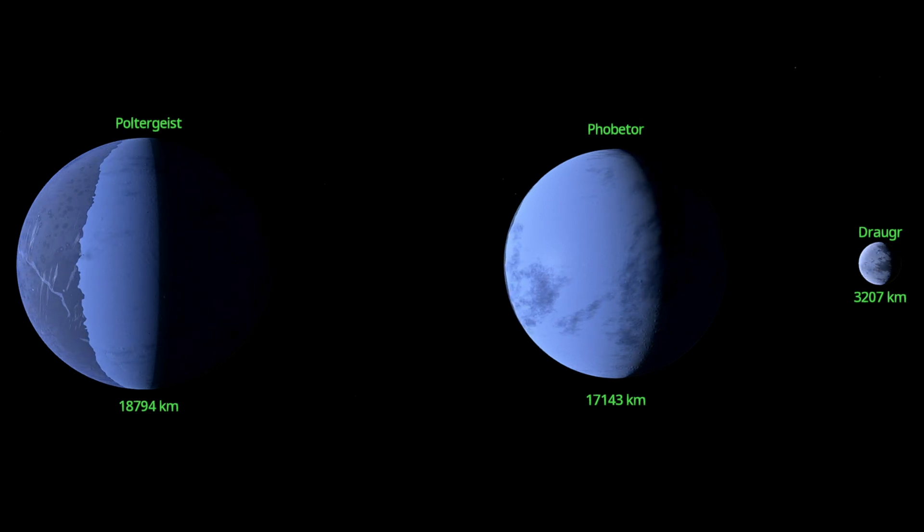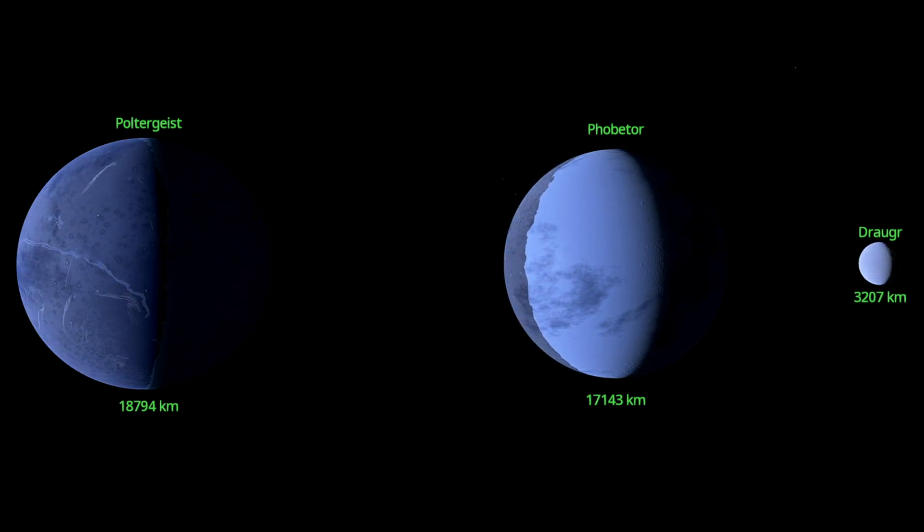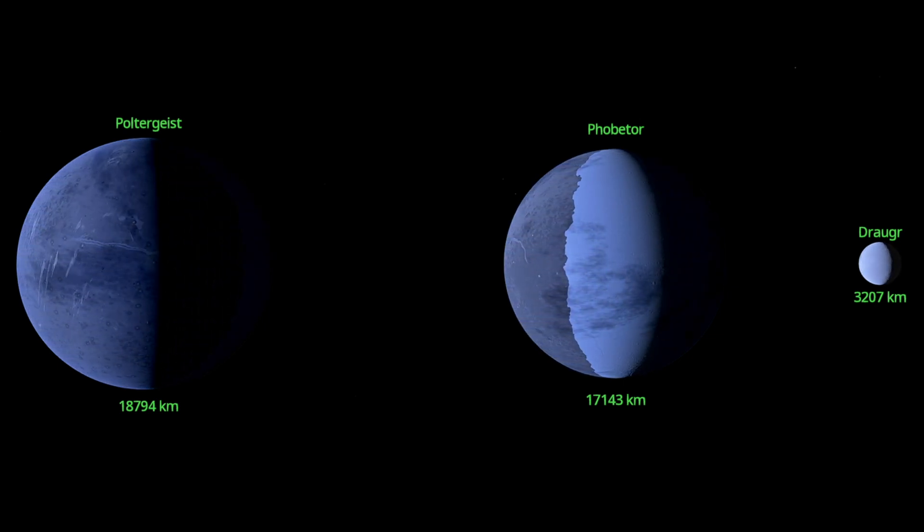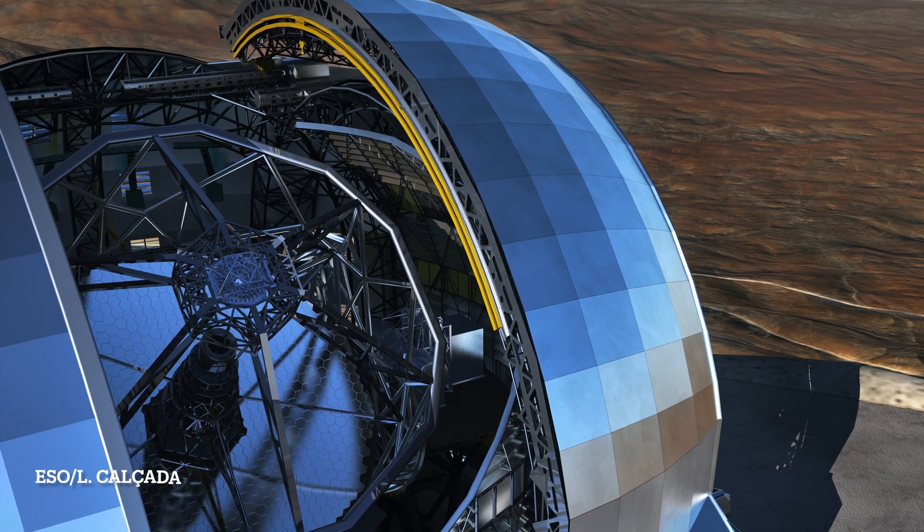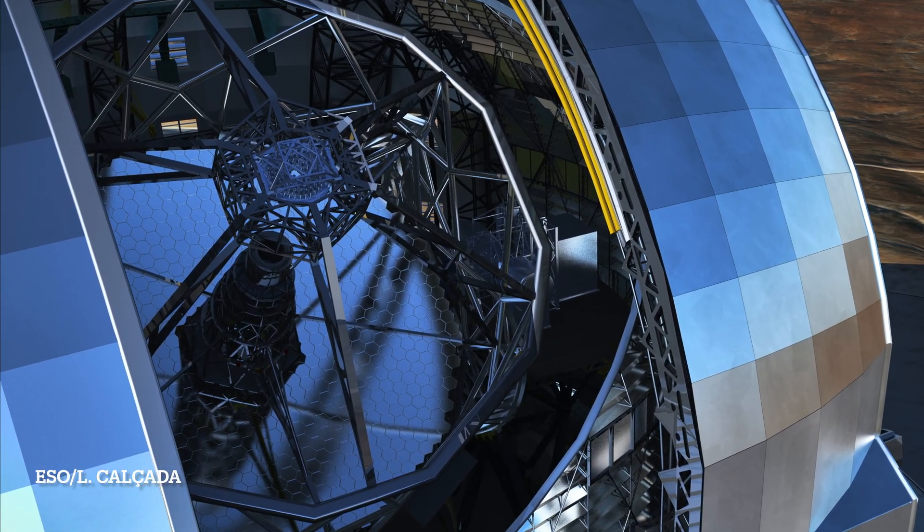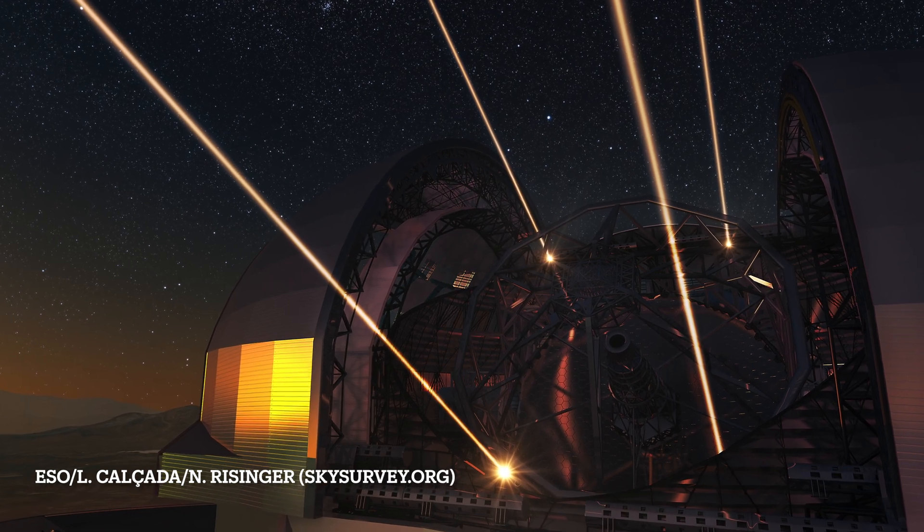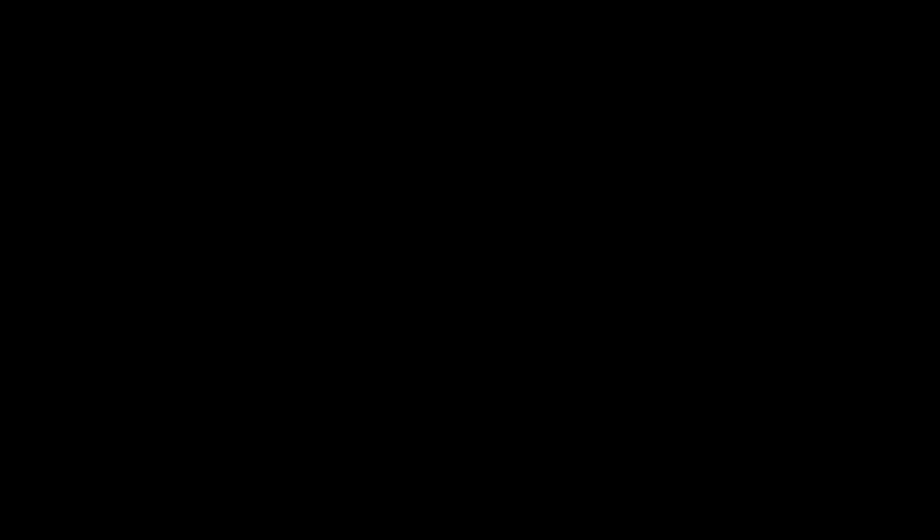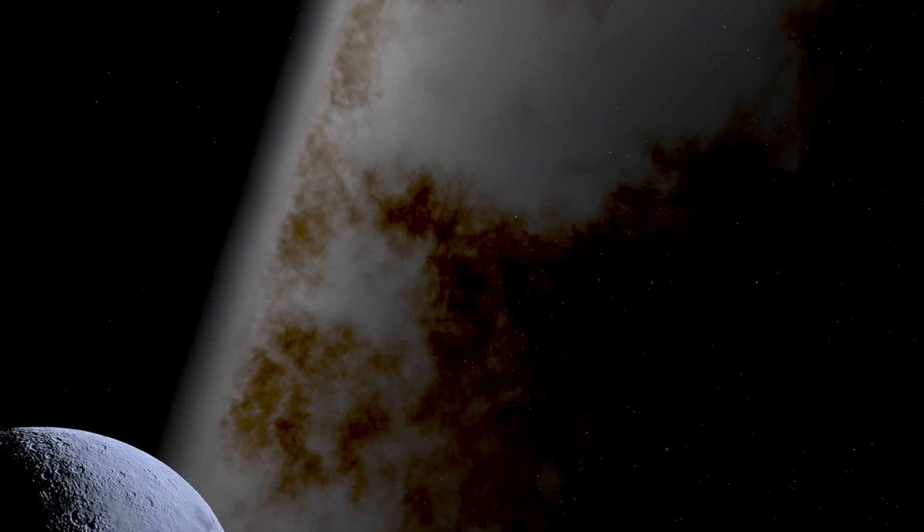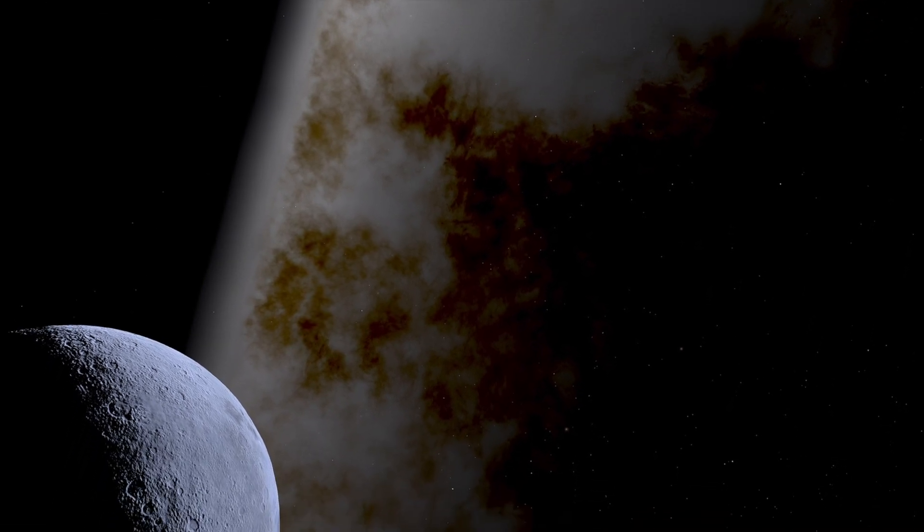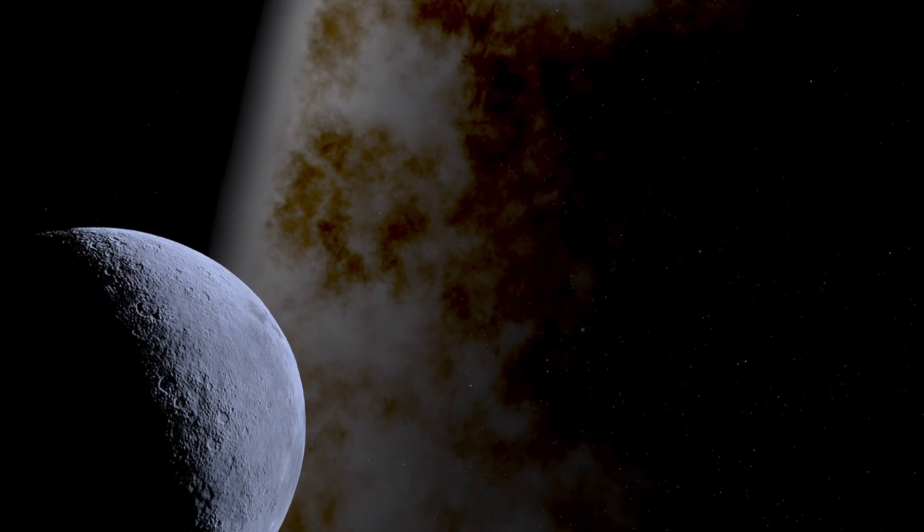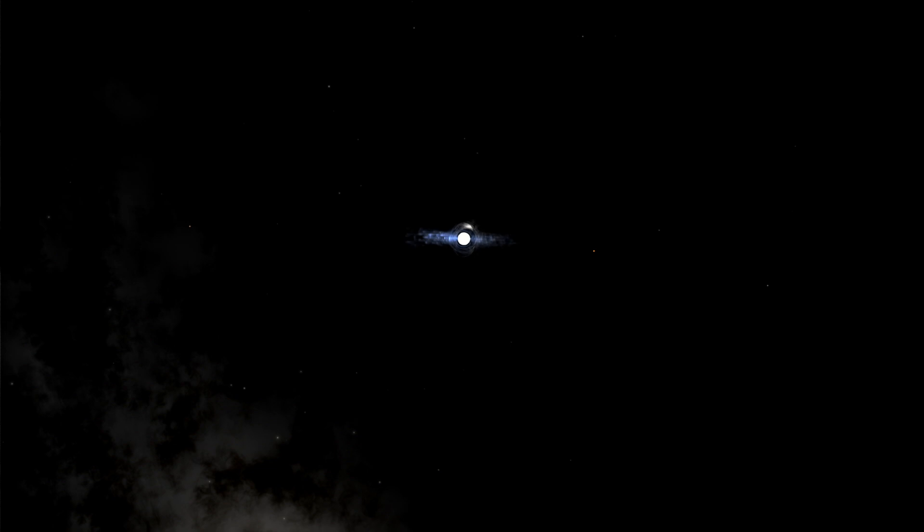Poltergeist, Phobator and Dregor represent a significant milestone in the history of astronomy. That's because in the early 1990s, these three planets were the first exoplanets discovered beyond our solar system. Located approximately 2,300 light-years from Earth in the constellation Virgo, these planets orbit a pulsar known as B1257 plus 12.